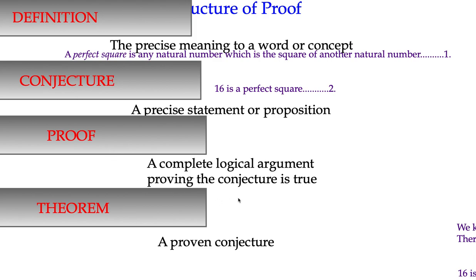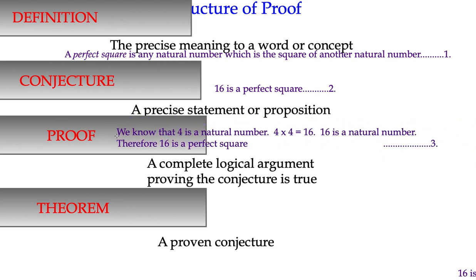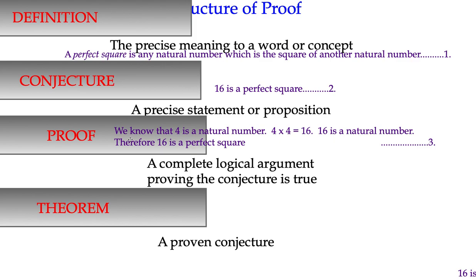Well, the logical argument, we're actually going to use the definition for that. The logical argument is we know that 4 is a natural number. And we know that 4 times 4 is 16. And 16 is a natural number. So by logic, we have applied the definition to our number 16.